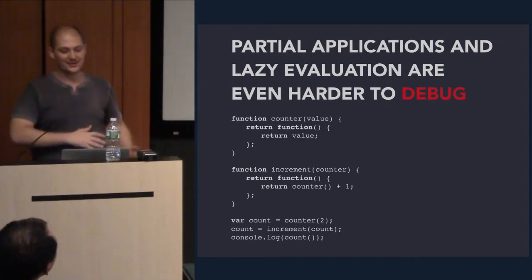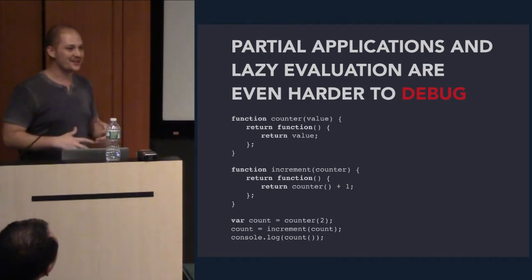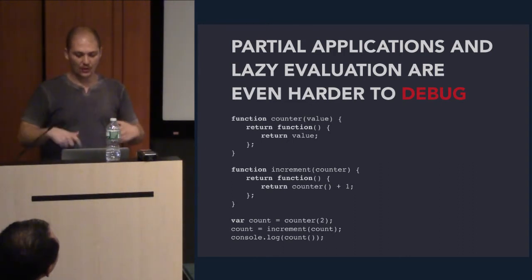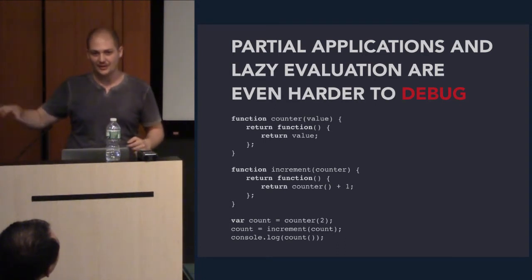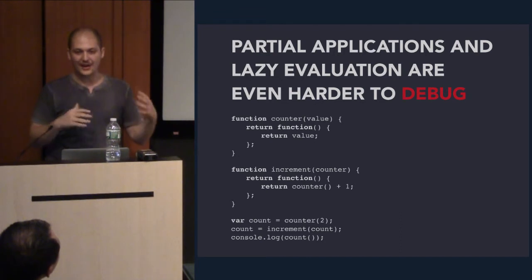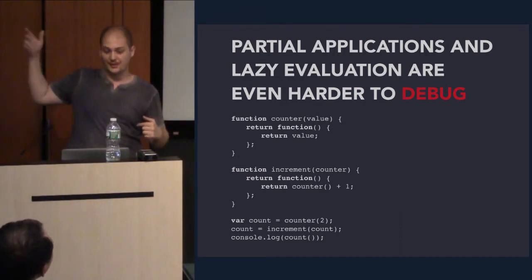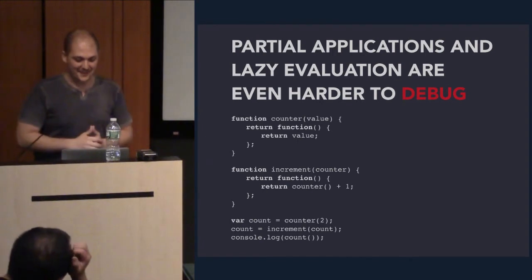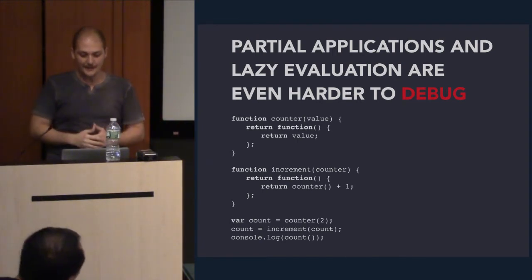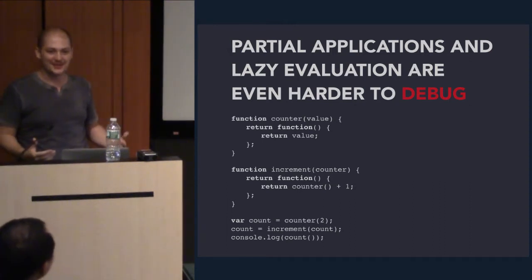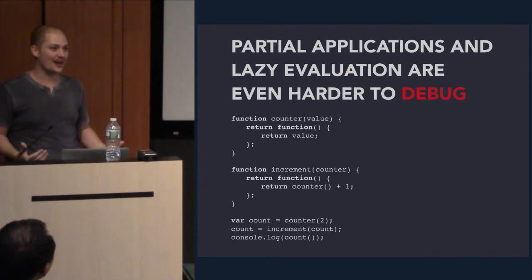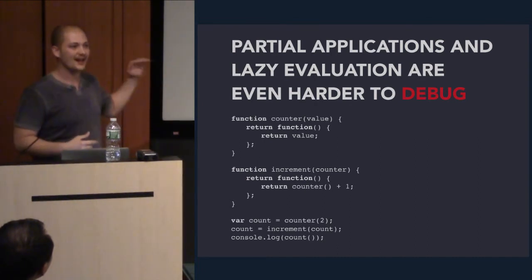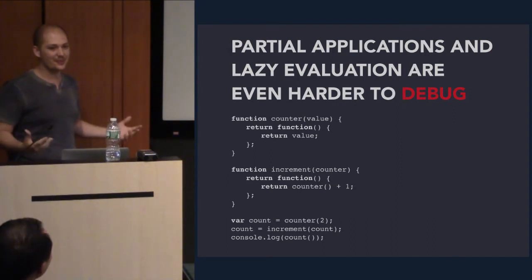Here's an extreme example of using functions. This is a way to implement a counter using pure functions. You have a factory function called counter, you pass it a value, it returns a function that when called will expose that original value. Then you have an increment function passed the original function, and it returns a new function that when called increments the value. It's kind of cool, and that's why we love JavaScript. But in production if I wanted to debug this — to set a breakpoint when the value changes — I can never do that, because the value never actually changes.